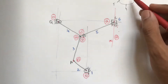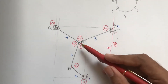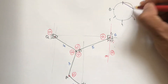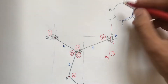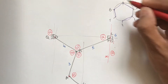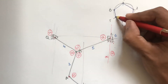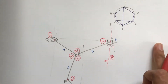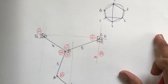Draw the available instantaneous centers with full lines in the circle: ICs 1-2, 2-3, 3-4, 5-6, 1-6, 4-5, 3-5, and 1-4. This is the total set of available instantaneous centers. Next step is to write the formula.